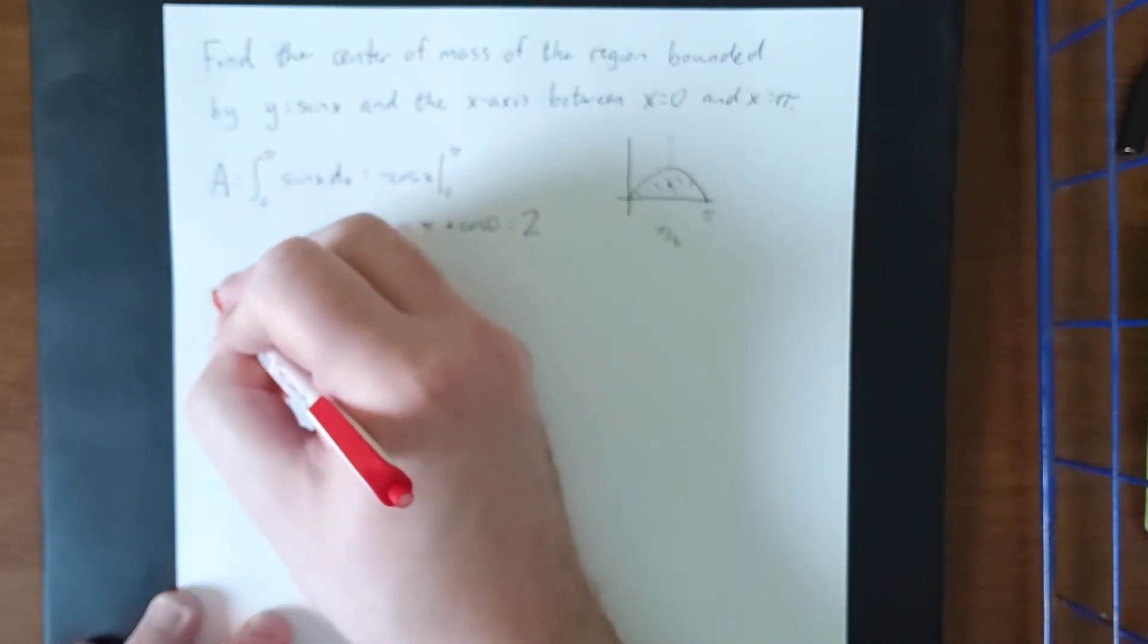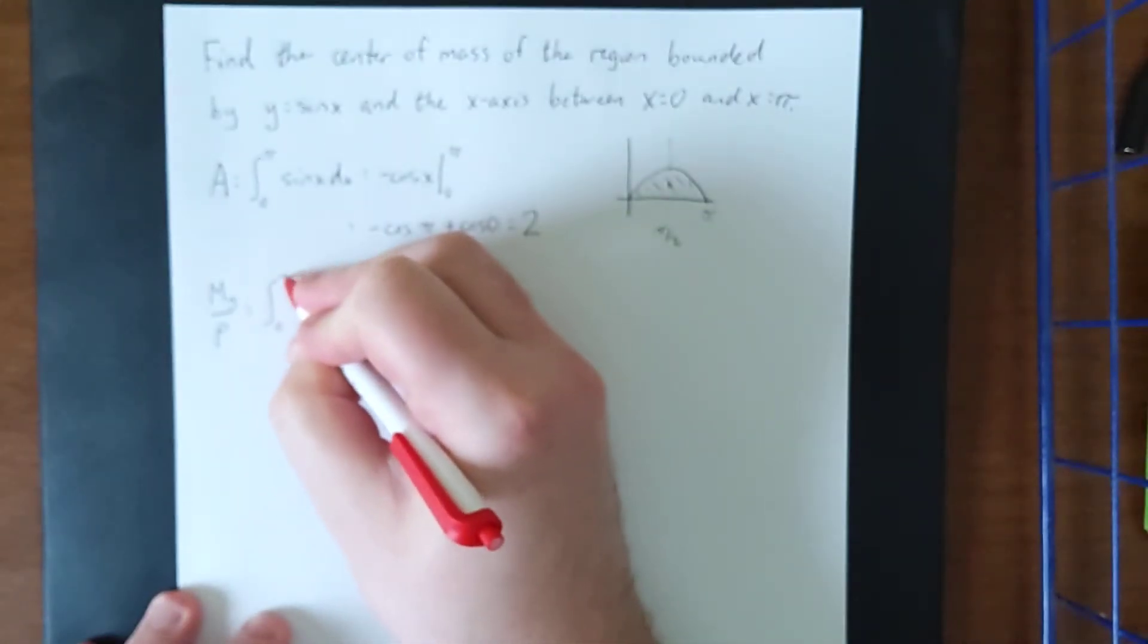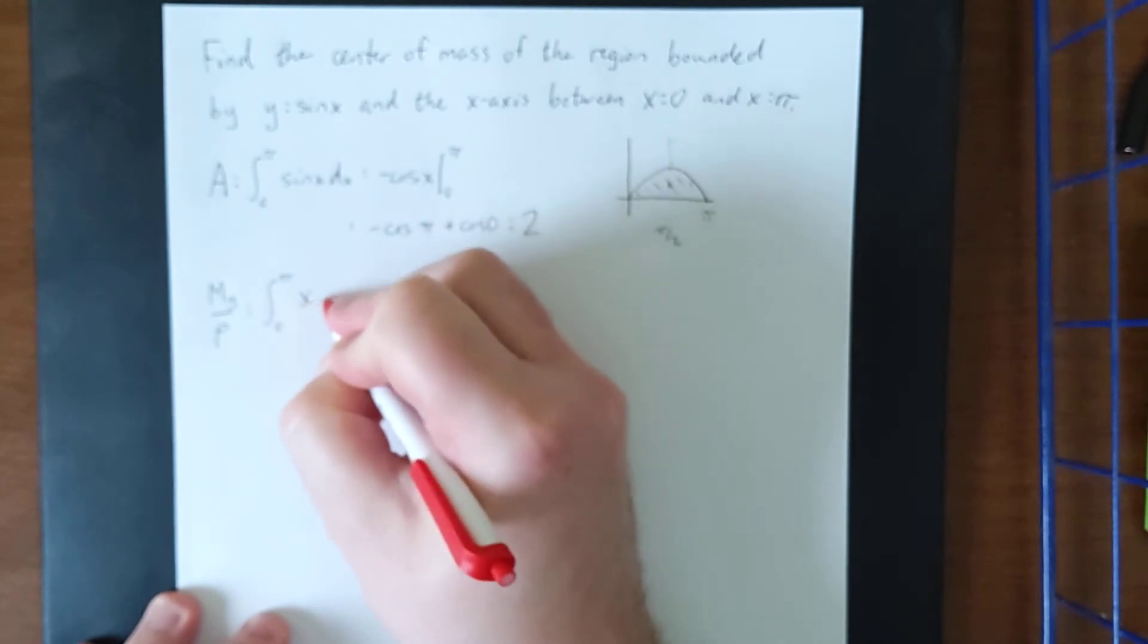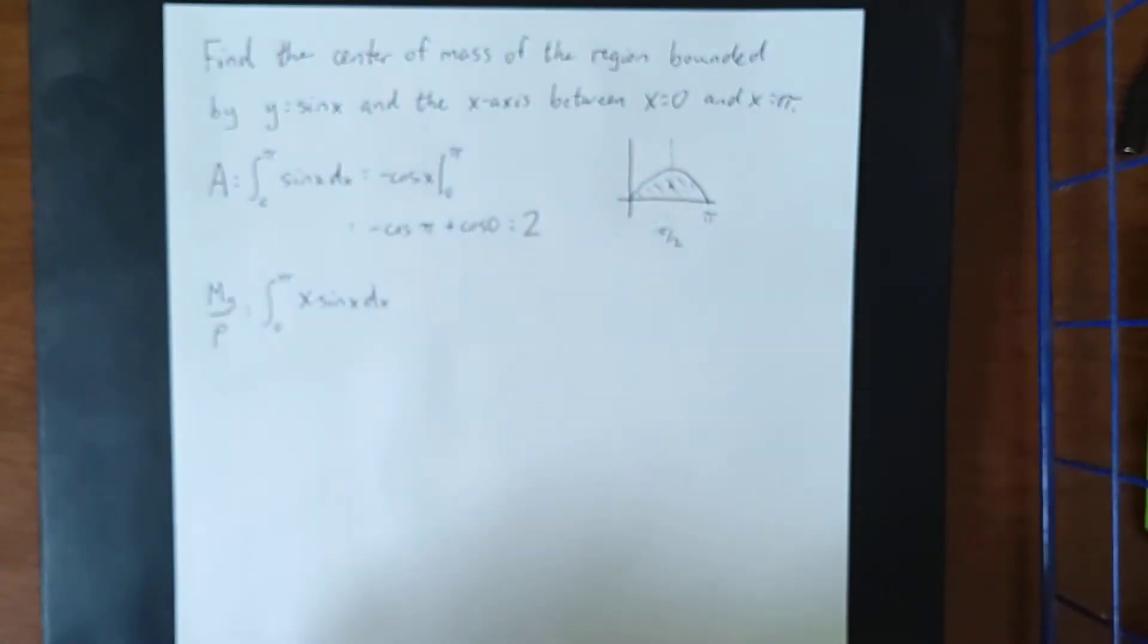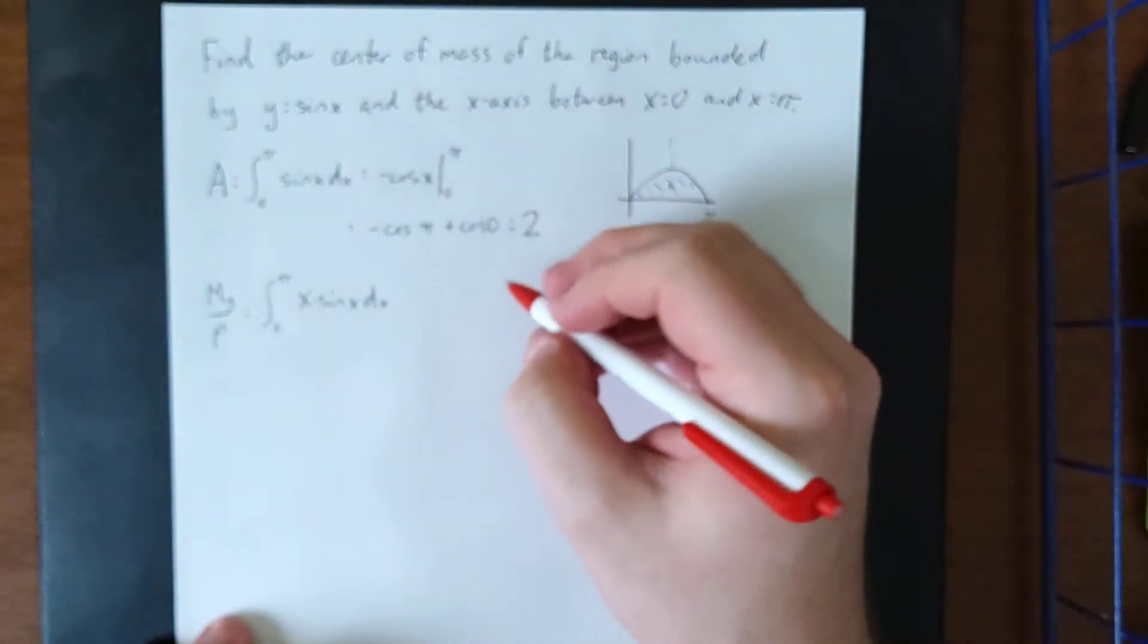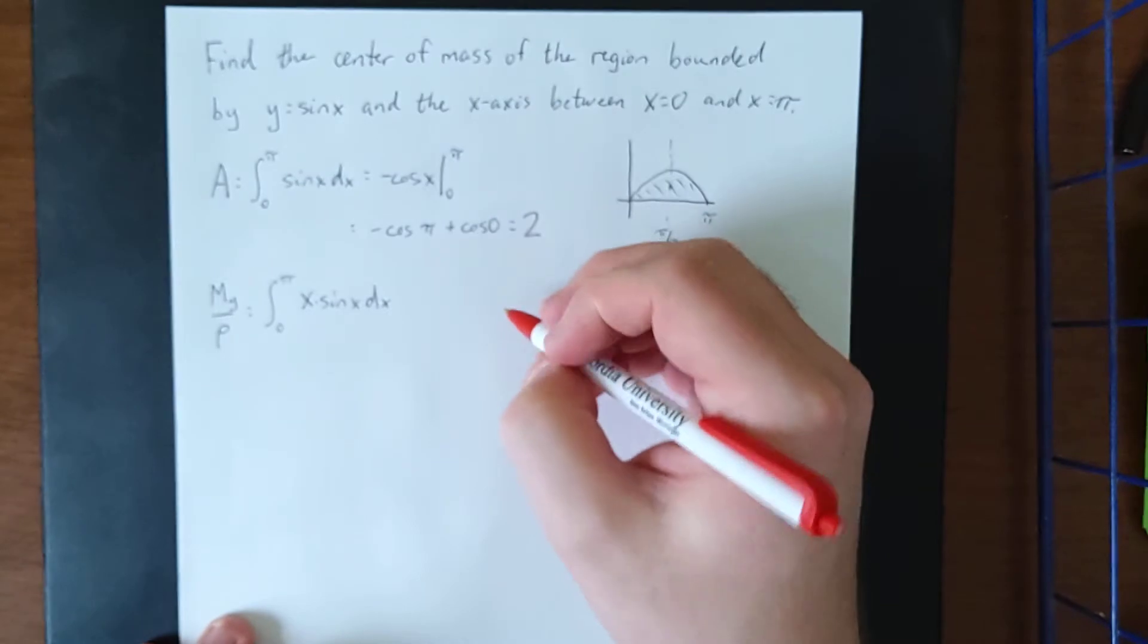For the moment about the y-axis, disregarding the density of the region, we would need the definite integral from zero to pi of x times the function in question. Now for this one, we are going to need integration by parts due to the fact that we have the product of an algebraic and a trigonometric function.